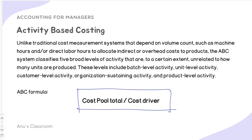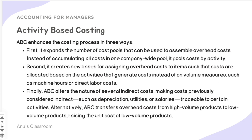For example, for electricity costs, ABC determines how much electricity was used for a particular batch or unit, and then assigns cost from the total electricity bill proportionally. The ABC costing formula is: total cost divided by the cost driver. For instance, if your total electricity bill is 1 lakh rupees and you produced 2 crore units, that 1 lakh rupees is divided by 2 crore units to find the electricity cost per unit.